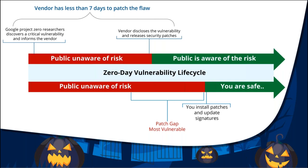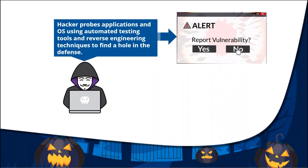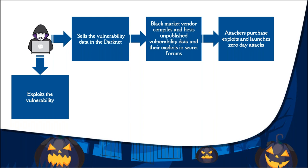This takes us to the anatomy of a zero-day attack. Imagine a hacker gets his hands on an uncharted vulnerability. Like a legitimate computer security researcher, he uses multiple automated testing tools to persistently probe into applications and operating systems, and leverages reverse engineering techniques to find a weakness — a backdoor. But unlike a legitimate security professional, he does not report the vulnerability to the software vendor. Once found, he can exploit it for personal gains or sell it to a black market broker.